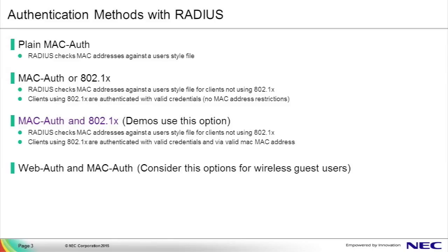The second scenario is where either 802.1X or MAC authentication may be used, and this is pertinent when some hosts have an 802.1X client and others don't. Thirdly is the scenario where 802.1X clients must also use MAC authentication — both the MAC address and 802.1X credentials are checked against the RADIUS server. This is what we'll show in the demo coming up. Finally, the fourth scenario uses web authentication and MAC authentication, which should be considered for wireless guest access.